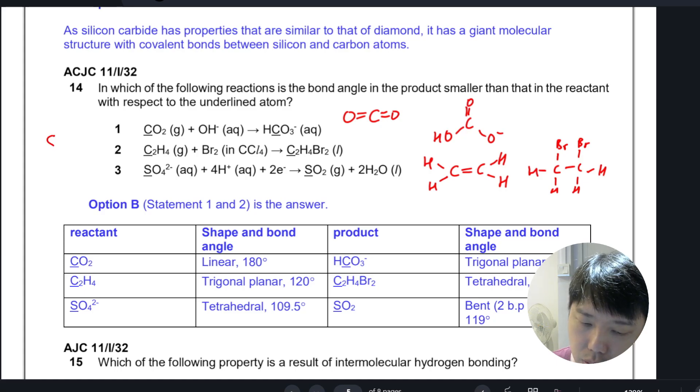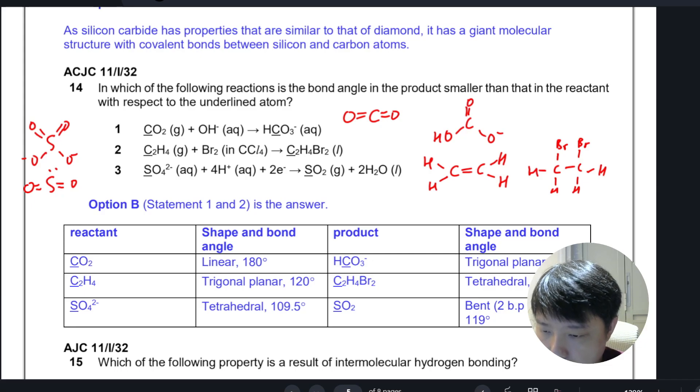For SO3 2- you have S double bond O double bond O with O minus O minus, and then SO2 with a lone pair here gives a bent shape. What do we want? We want the bond angle of the product to be smaller.